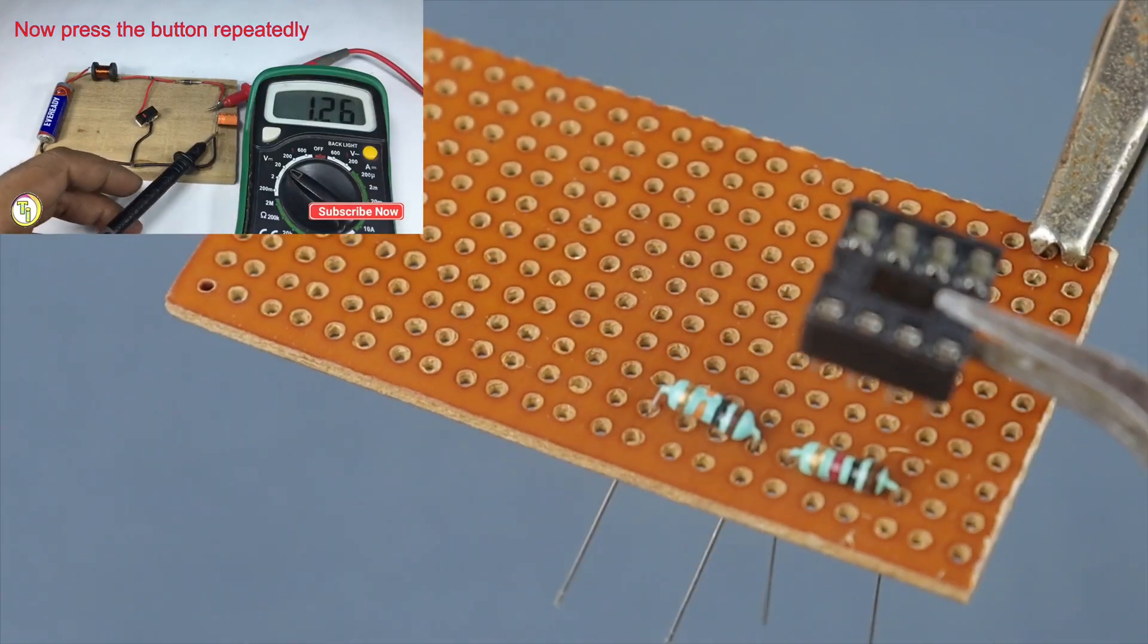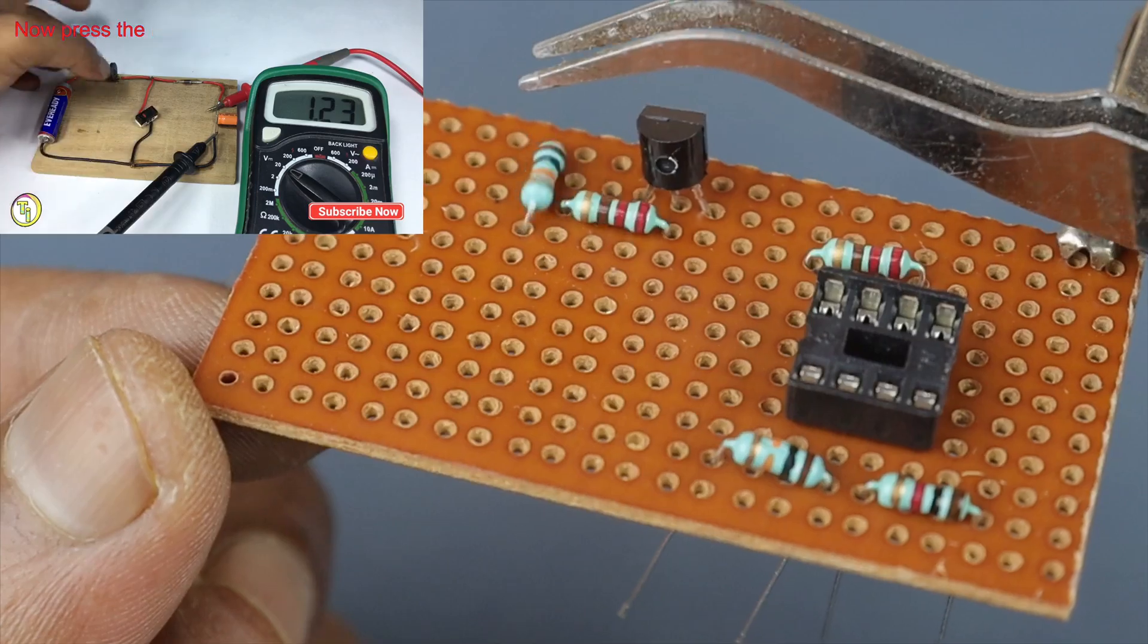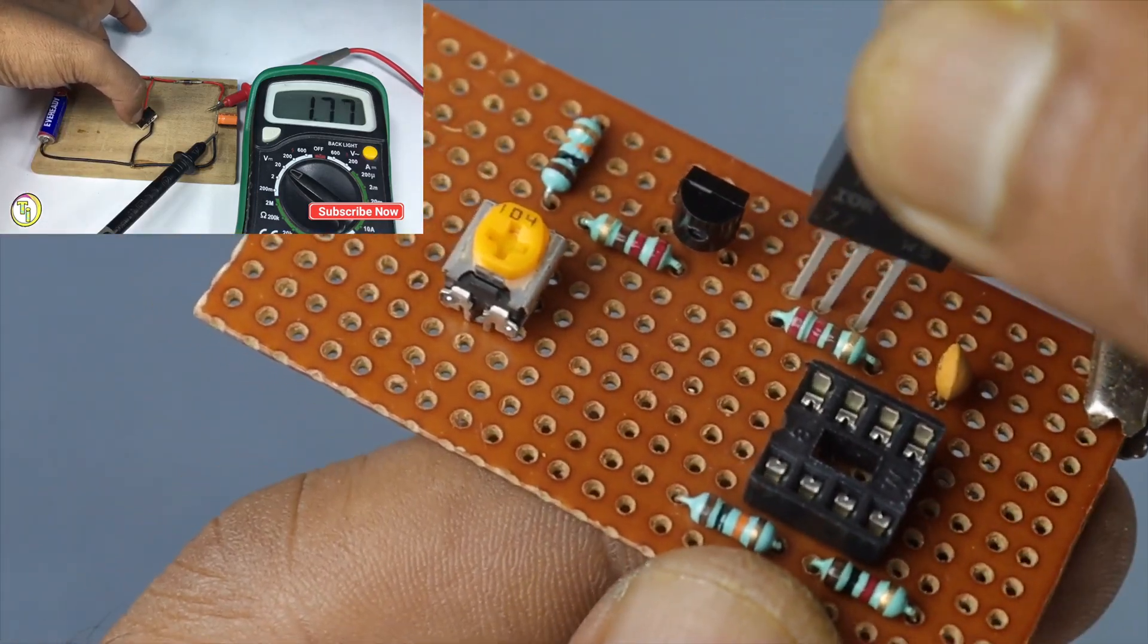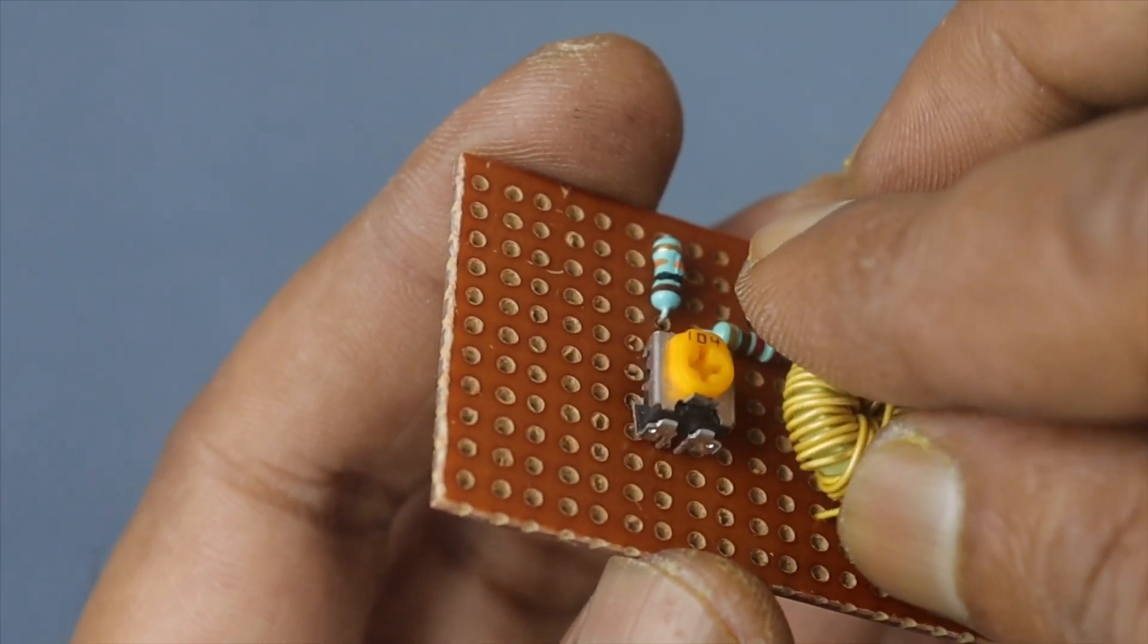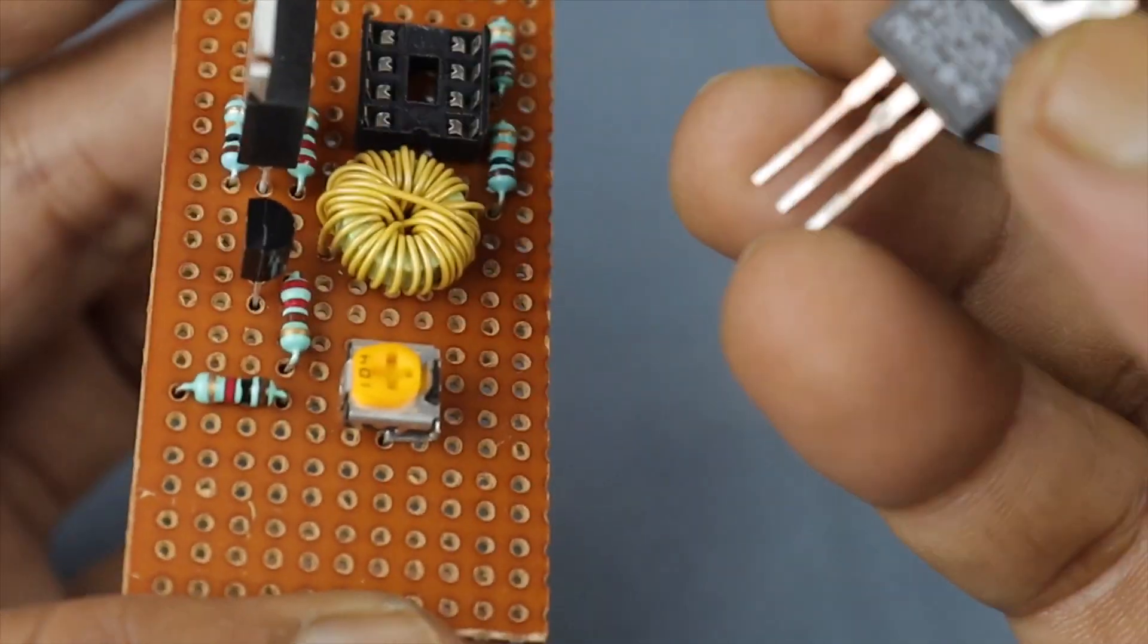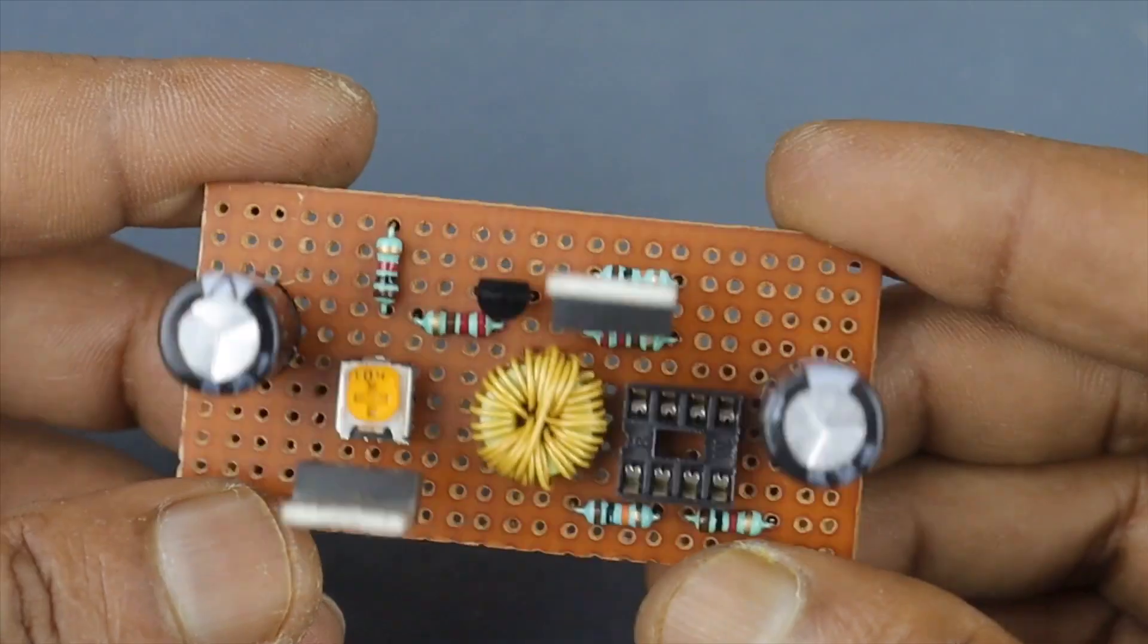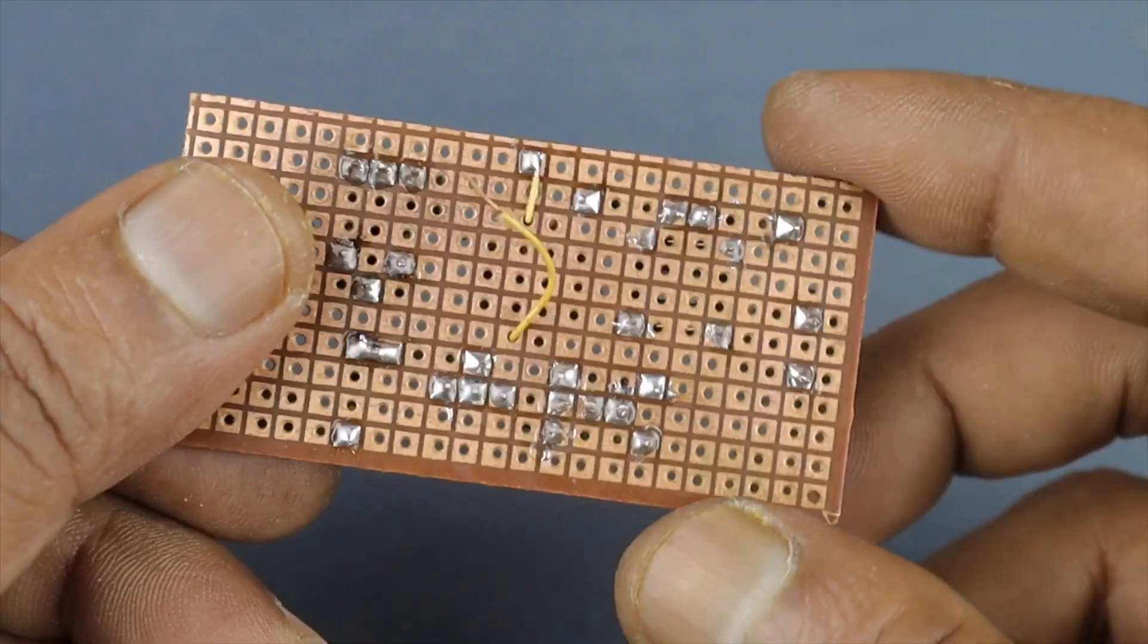If you want to know how a basic boost converter circuit works, please watch my previous video, the link is given in the video description. Here I'm using a Schottky diode to rectify the high frequency output. You can use any ultrafast diode as well.